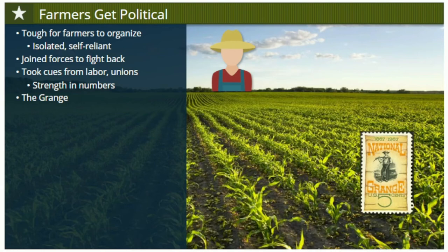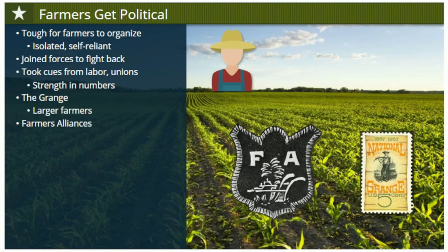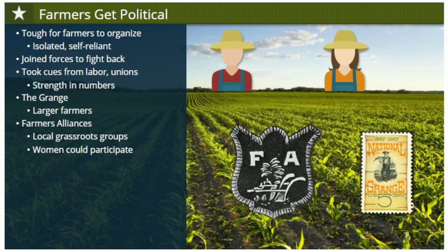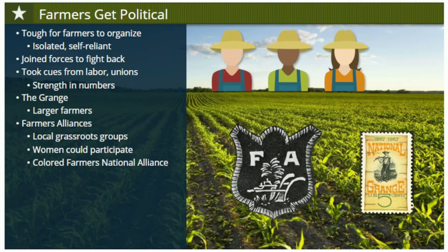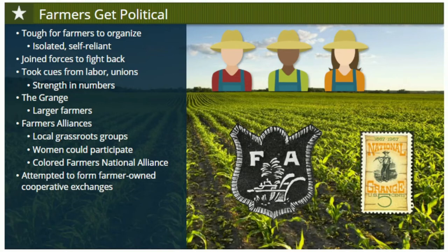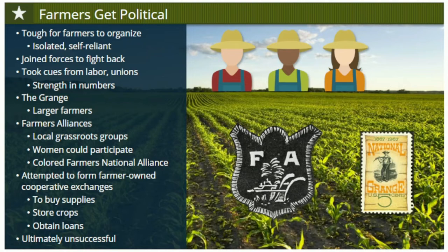So farmers formed similar organizations. One was the National Grange of the Patrons of Husbandry, better known as the Grange, whose members — called Grangers — tended to be wealthier, larger farmers. Other organizations, known as Farmers' Alliances, were more local grassroots groups representing smaller farmers. Farmers' Alliances allowed women to be members and assume important leadership roles. A Colored Farmers' National Alliance formed in Texas represented African-American farmers. Grangers and Alliance members attempted to form cooperative exchanges owned and controlled by farmers, allowing them to buy supplies, store crops, and obtain loans at reasonable prices — but these efforts were ultimately unsuccessful in fixing the larger problems of agriculture.